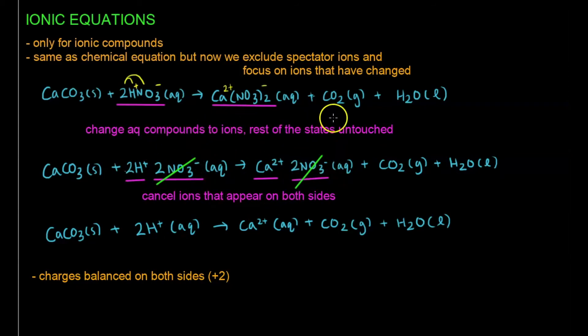And these are called spectator ions, because left-hand side to right-hand side, reactants to product, they don't do anything, they just remain as the same charge. And they're called spectator ions, they just don't do anything, they just watch the show.